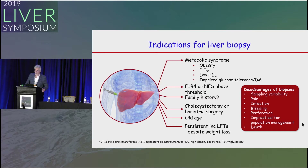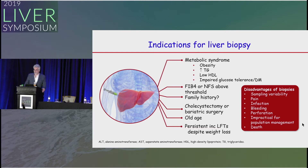The fundamental clinical question is: who should get a liver biopsy? Patients with metabolic syndrome have higher risk of inflammation; patients with diabetes have a higher rate of fibrosis. FIB-4 or NFS above threshold should probably prompt biopsy. Family history of advanced NAFLD-related liver disease warrants biopsy. Liver biopsy should be taken during cholecystectomy or bariatric surgery. Old age and persistently increased LFTs despite weight loss are also indications.